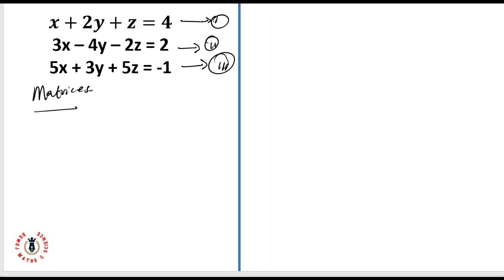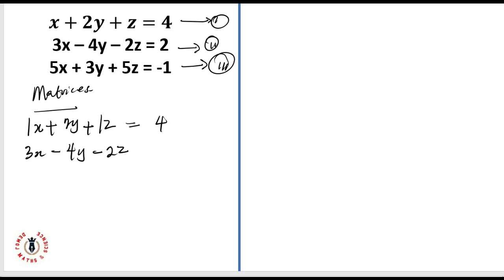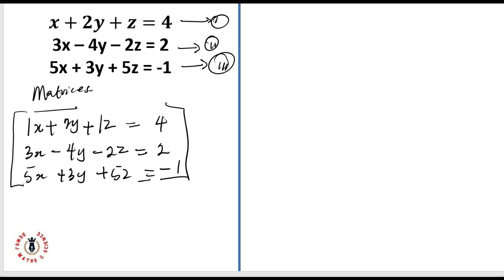The first thing I'm going to do is make a matrix out of these equations. From equation 1, we have 1x plus 2y plus 1z equals 2. And here we have 5x plus 3y plus 5z equals minus 1. We're going to make arrays out of all of these and turn them into a matrix. The first set should give us a 3 by 3 matrix.